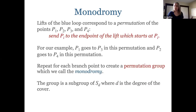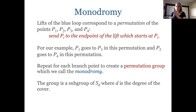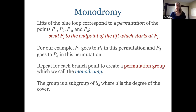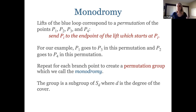If you do this for all the branch points, you get a permutation group, and that's what we call the monodromy. It's going to connect to the automorphism group as well. We will need this monodromy — this permutation group — going forward to understand which groups can act in certain ways.